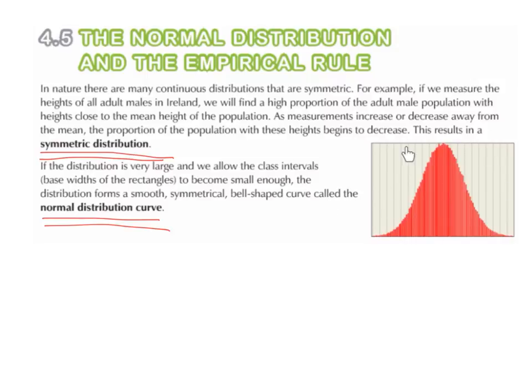Here is an example of the normal distribution curve. We can see if we were to draw a line straight down the middle, we would pretty much have a mirror line. It would be symmetrical on either side.